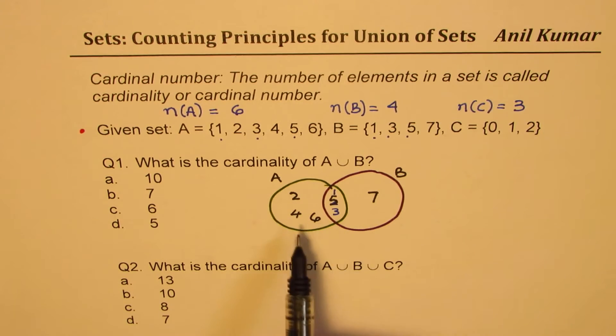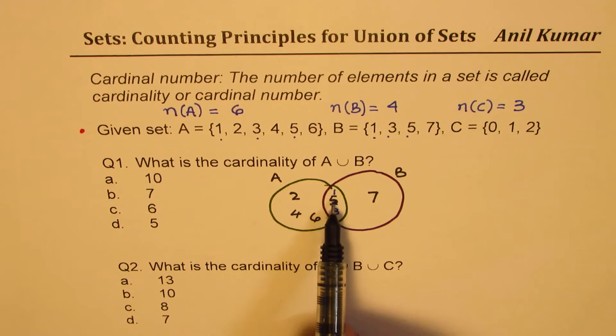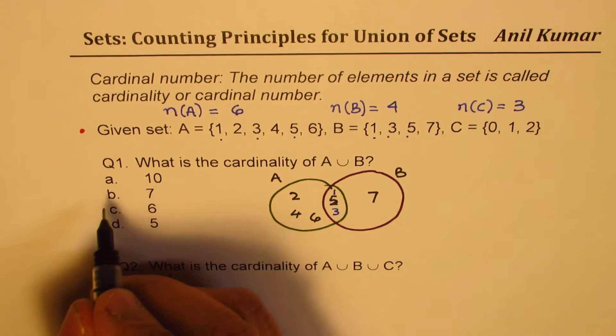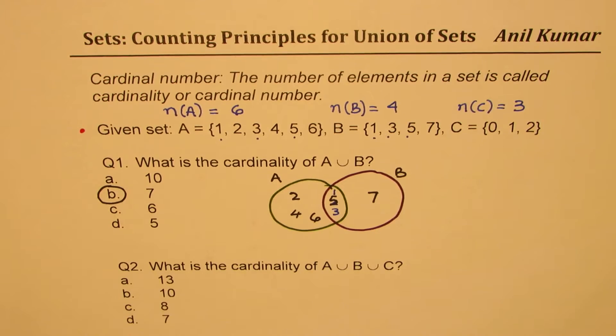Now, you can count the elements. We have 1, 2, 3, 4, 5, 6, and 7. So, the right choice is B, which is 7.